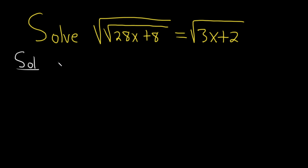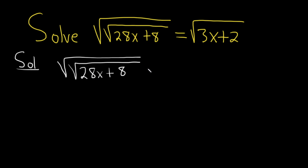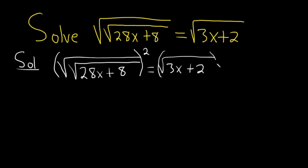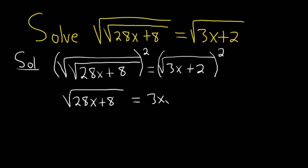So I'm going to write it down one more time. We have the square root of the square root of 28x plus 8, and that's equal to the square root of 3x plus 2. Step one is to get rid of the square roots, so we'll square both sides. On the left-hand side we're left with the square root of 28x plus 8, and on the right we just have 3x plus 2.